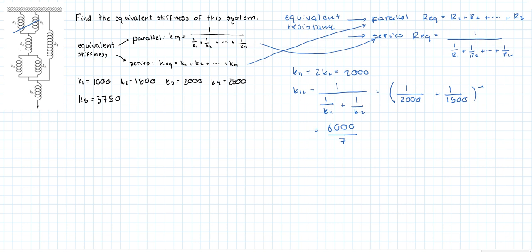Now let's combine k_3 and k_3 — just call it k_33 — which is equal to 2·k_3, so that's 4000.